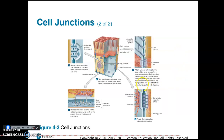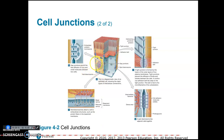Desmosomes are like a spot weld — they're very strong connections but don't form a tight seal; they just form a very strong connection in one spot. Hemidesmosomes attach the cell to the basement membrane. Gap junctions have channels that run through and allow materials to move from one cell to the next very easily.